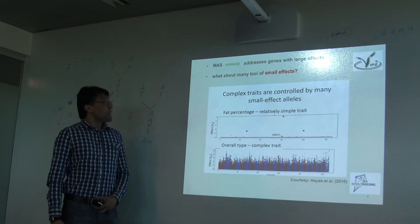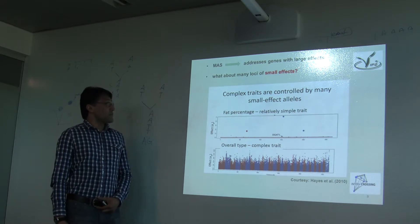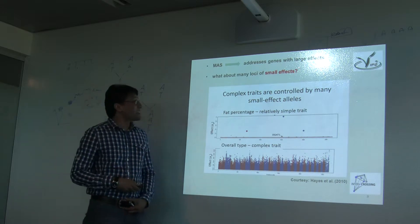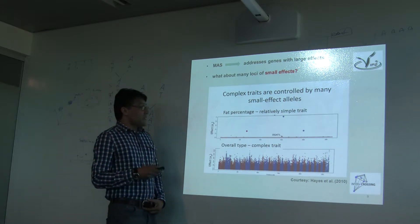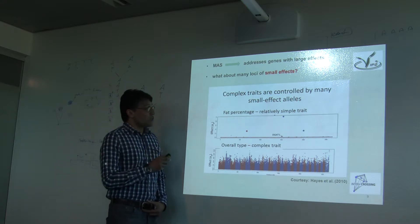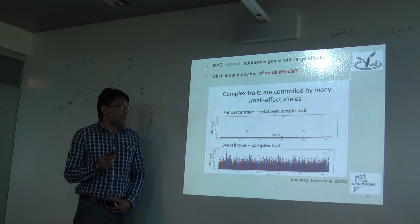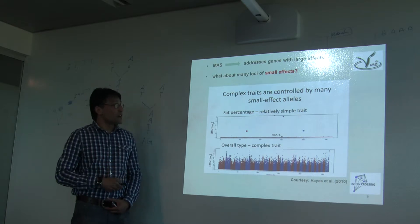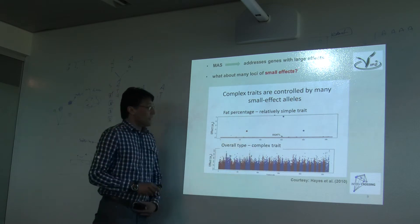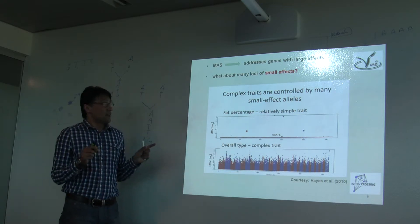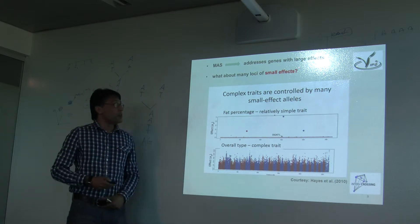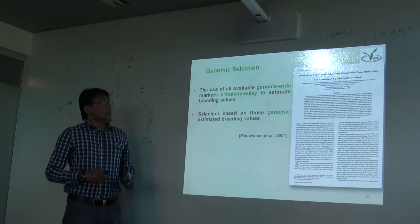Here we have an example of milk fat percentage in dairy — borrowed from animal science selection. This trait is a simple trait actually controlled by the DGAT1 gene. And we have an example of overall complex traits, which as you can see are controlled by very many loci of small effects.